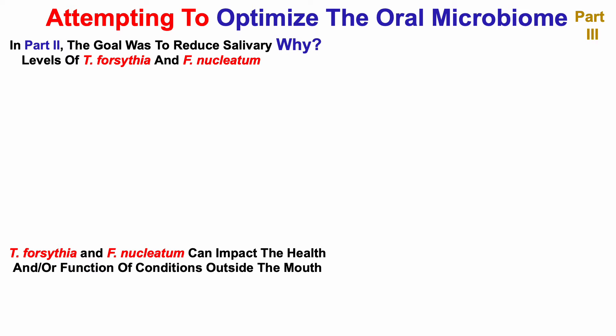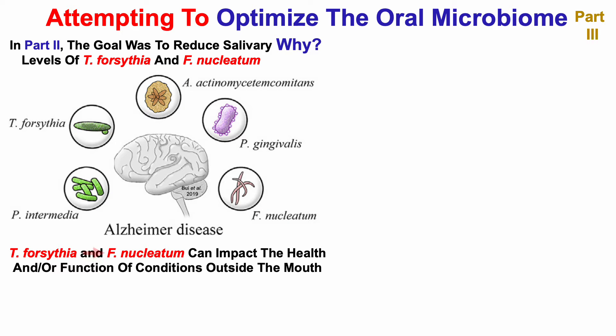Both of these bacteria can impact the health and function of conditions not only in the mouth but outside the mouth. One of those is Alzheimer's disease. As we can see with the list of bacteria linked with Alzheimer's disease, both Tannerella forsythia and Fusobacterium nucleatum have been linked with Alzheimer's disease. Also note that on this list is P. gingivalis, and that bacterium will make an appearance later in the video.